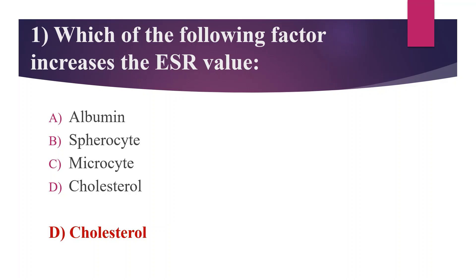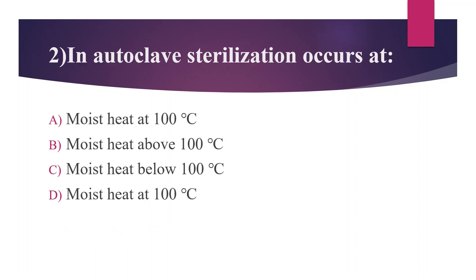Second question: in autoclave, sterilization occurs at — Option A: moist heat at 100°C. Option B: moist heat above 100°C. Option C: moist heat below 100°C. Option D: moist heat at 100°C. The answer is Option B, moist heat above 100°C.